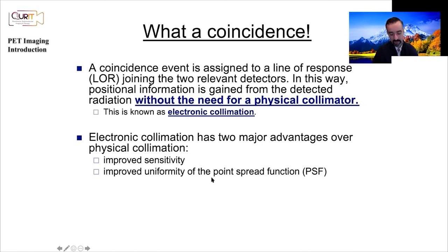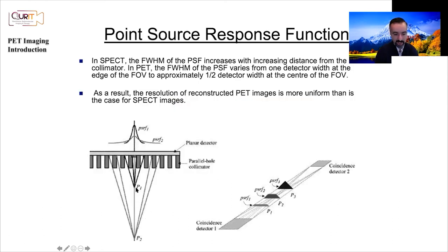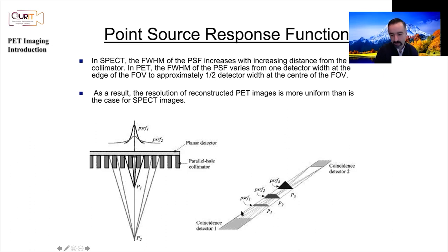PET also provides improved uniformity of the point spread function. In single-photon imaging, as you get away from the face of the collimator, the point spread function and resolution degrade. But with two coincidence detectors, whether the source is at different positions along the line of response, the profiles are pretty similar — the PSF is not significantly widening. Because you're constrained within the strip connection between two coincidence detectors, there is significant uniformity of resolution regardless of where you are on the line of response, unlike in single-photon imaging.